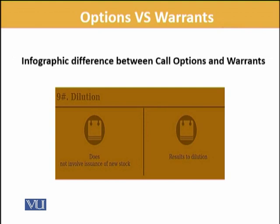Dilution is another key difference. Options do not cause any dilution — neither in earnings nor in share-holding patterns. Whereas in the case of warrants, dilution does occur, because the number of shares will increase, the shareholding pattern will change, and there will also be a dilution impact on earnings.